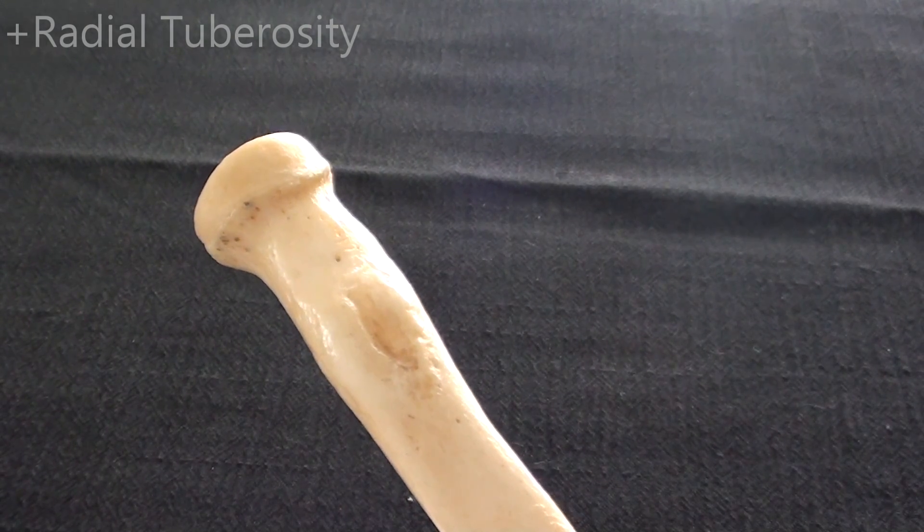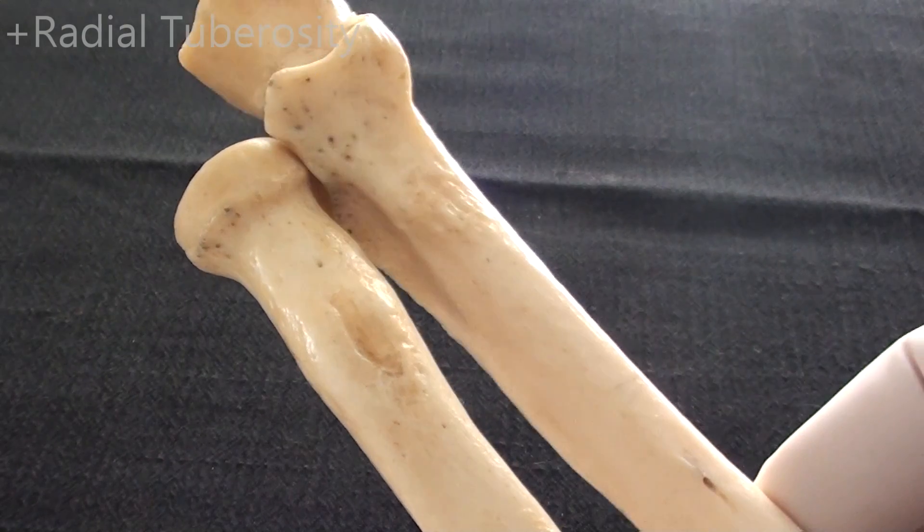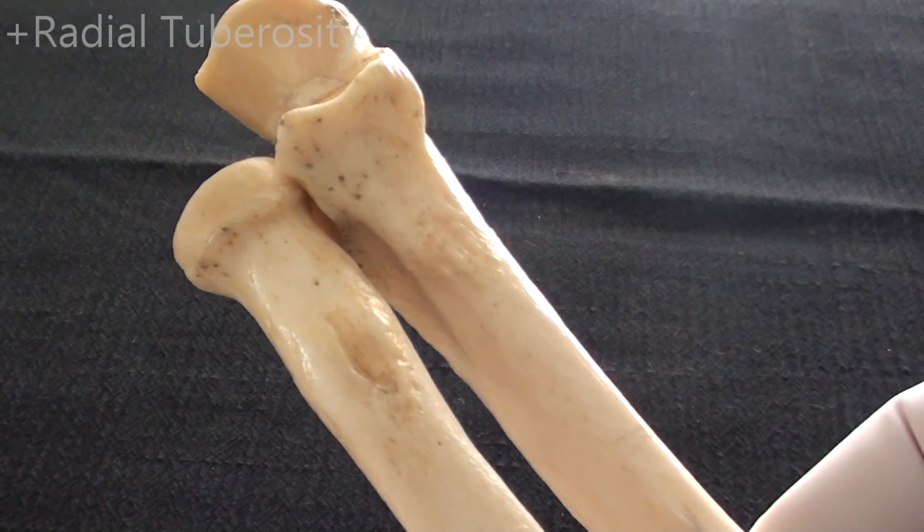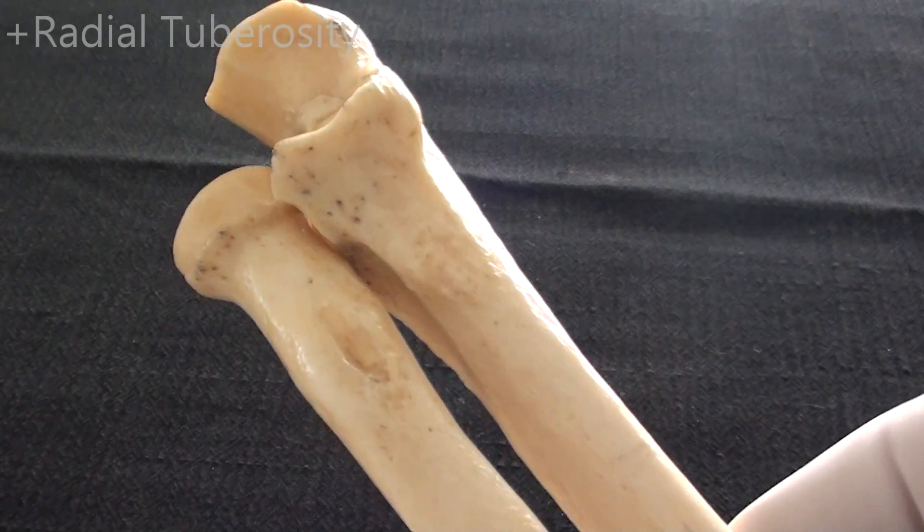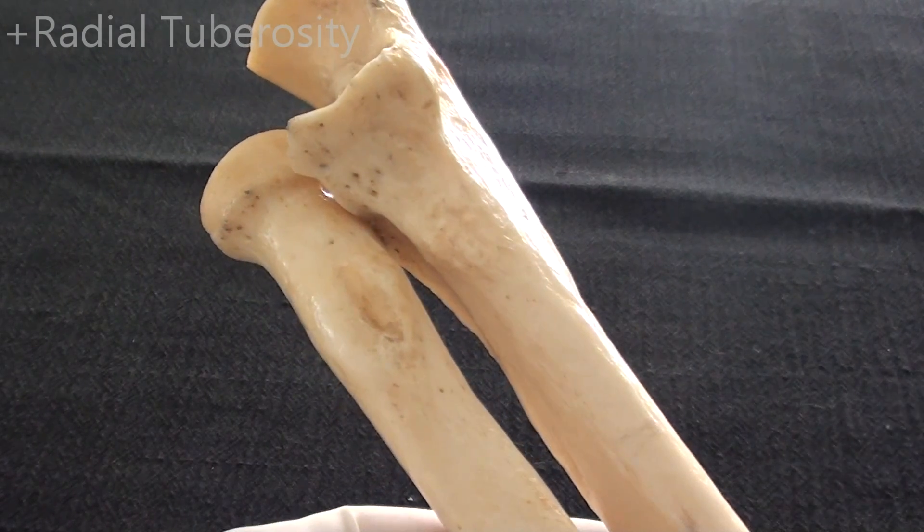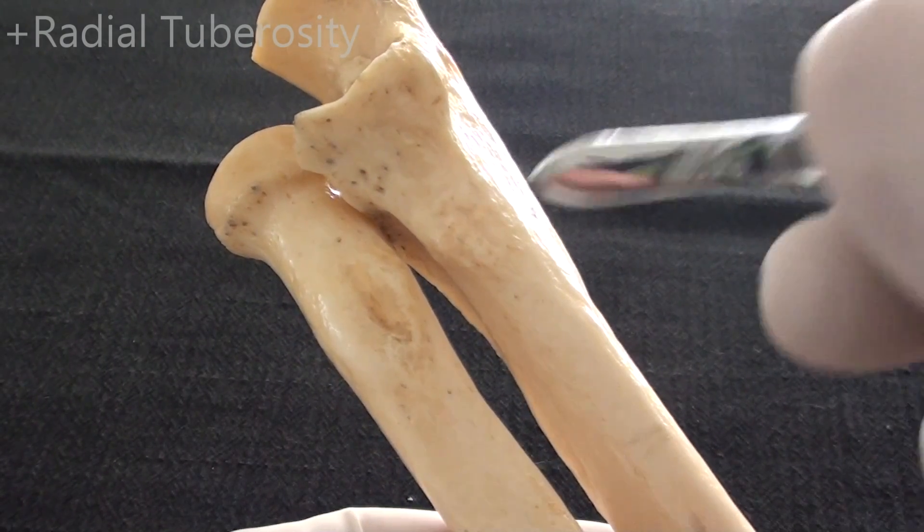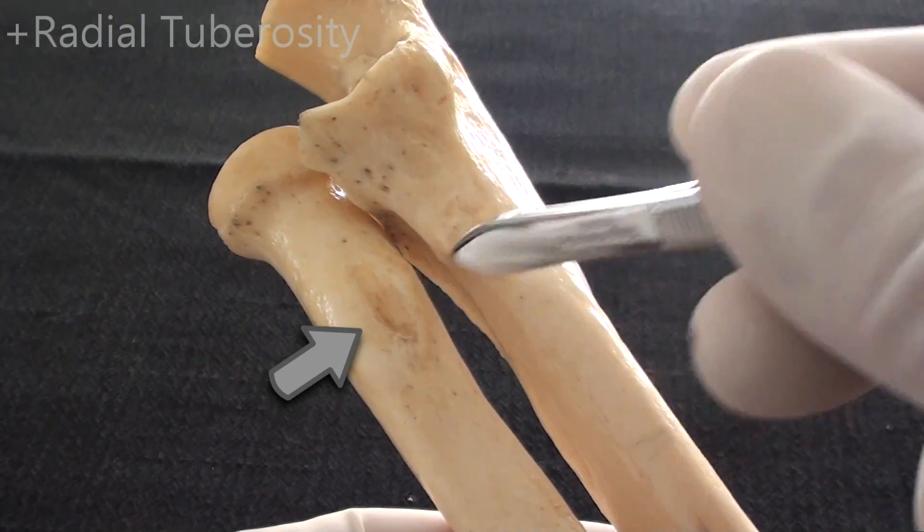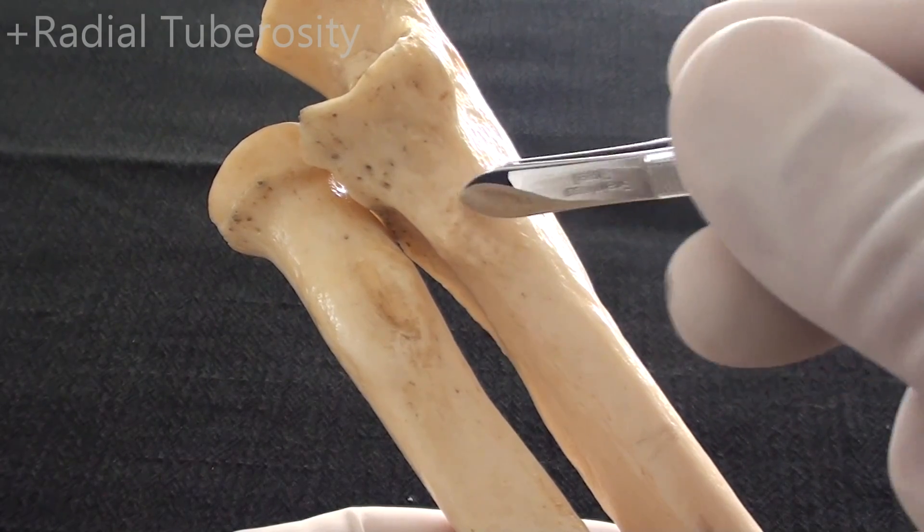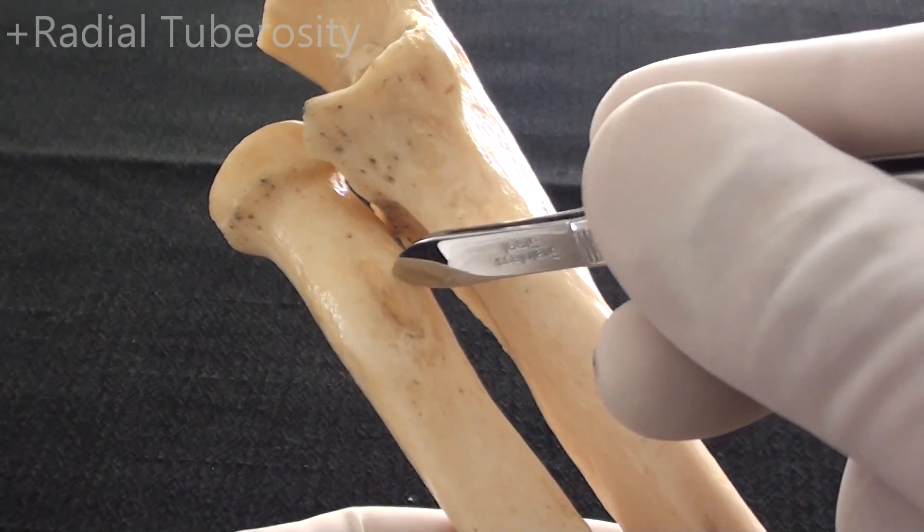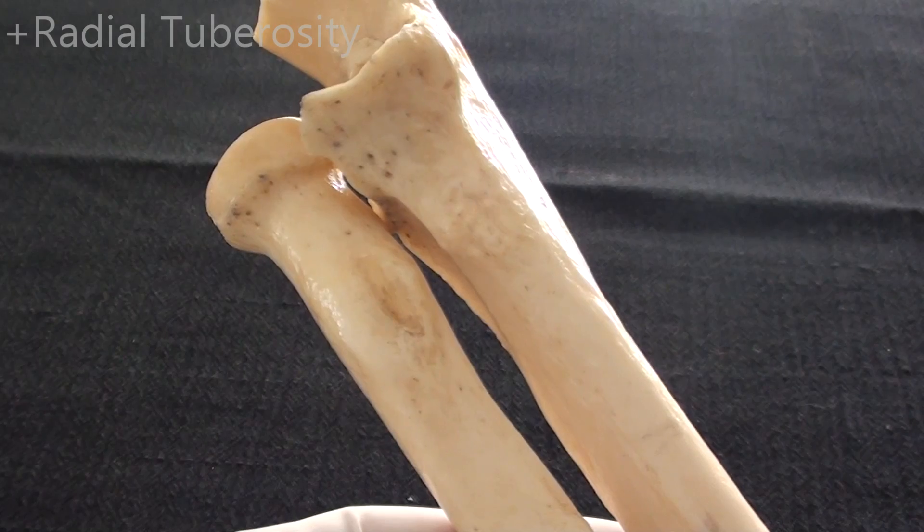Interestingly enough, if we place right-sided ulna immediately next to the radius, one can see that both radial and ulnar tuberosities are practically at the very same level. This is the radial tuberosity, this is the ulnar tuberosity, insertion of brachialis, insertion of biceps brachii muscle.